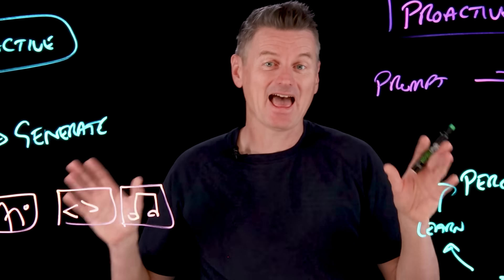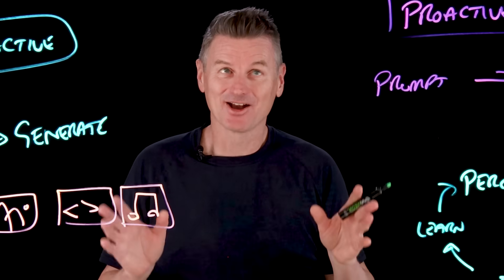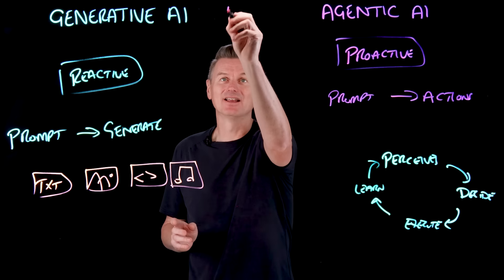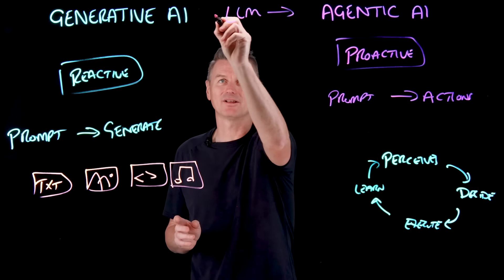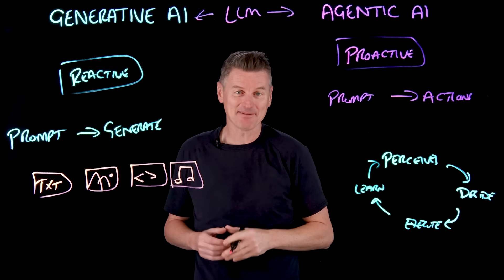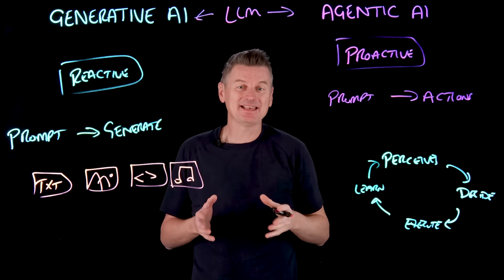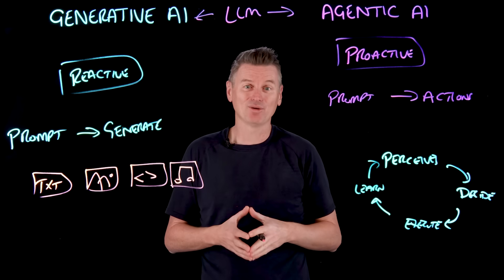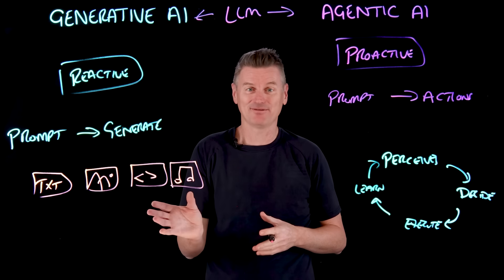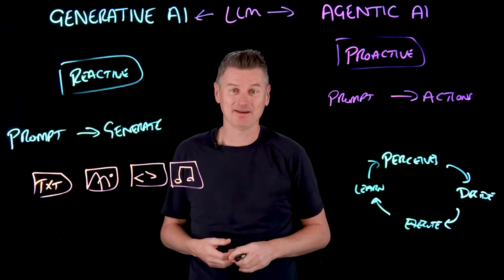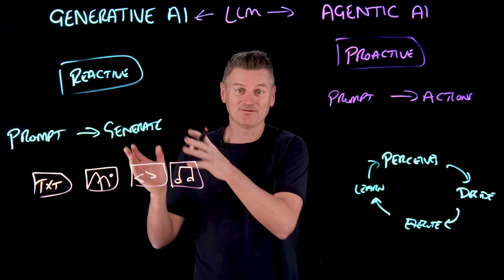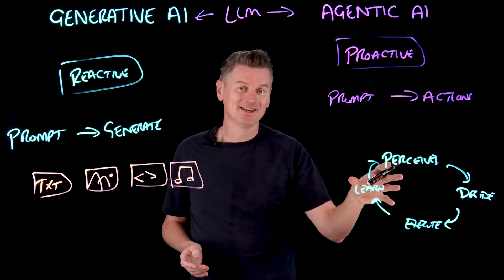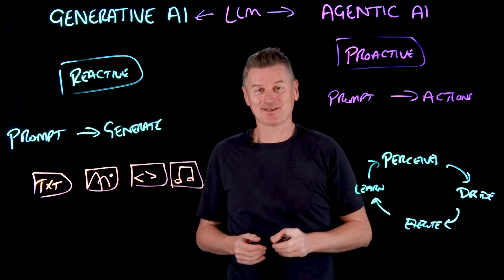Both of these AI approaches often share a common foundation: large language models, or LLMs. LLMs serve as the backbone for chatbots. There are other tools used for some generative tasks — diffusion models, typically for images and audio — but for chatbots we use LLMs. And LLMs also provide the reasoning engine that powers agentic systems.